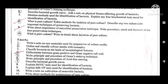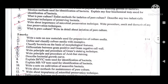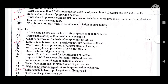The seventh question: mention methods for identification of bacteria and explain any four biochemical tests used for identification. The eighth question: what is pure culture? Enlist methods for isolation of pure culture and describe any two industrially important techniques for preserving bacteria — cryopreservation and paraffin preservation are examples. The ninth question: write about the importance of microbial preservation techniques.